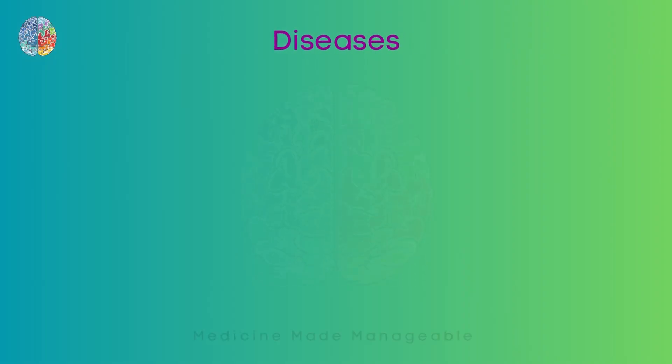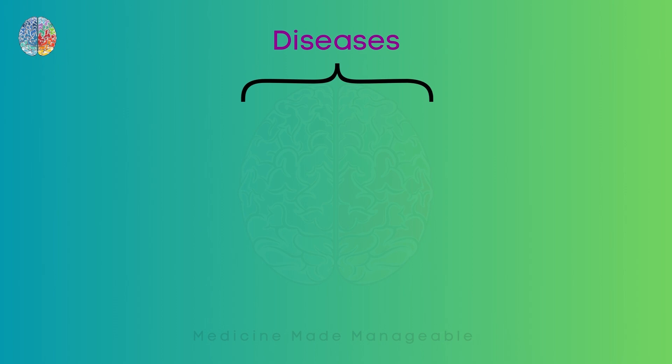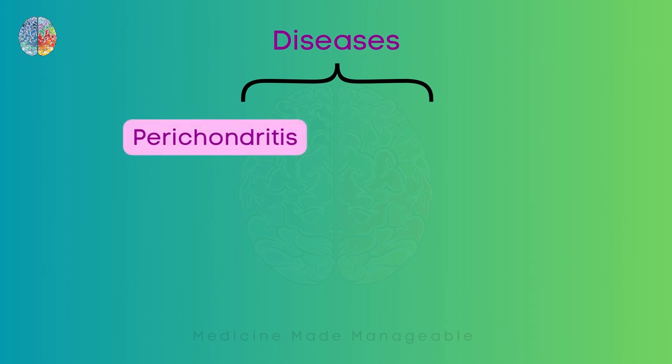In this video, we're mainly gonna be talking about two diseases. The first one is perichondritis. Then we're gonna be talking about hematoma auris.